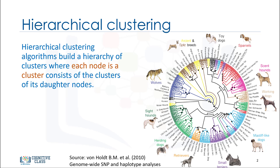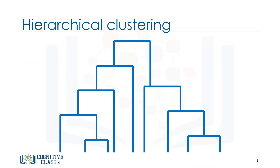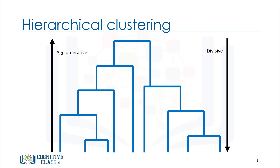Hierarchical clustering algorithms build a hierarchy of clusters where each node is a cluster consisting of the clusters of its daughter nodes. Strategies for hierarchical clustering generally fall into two types: divisive and agglomerative.